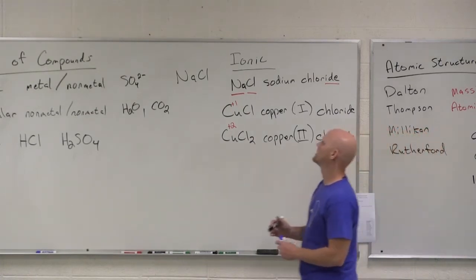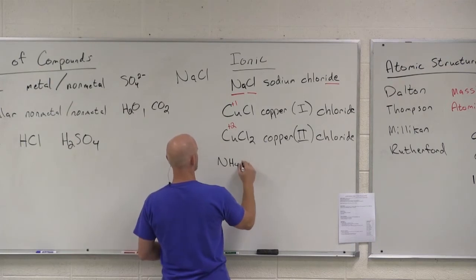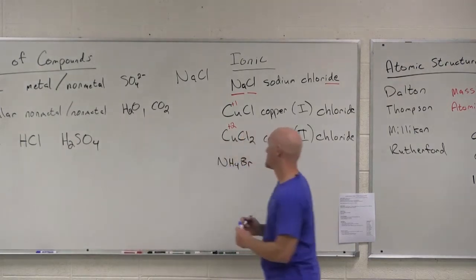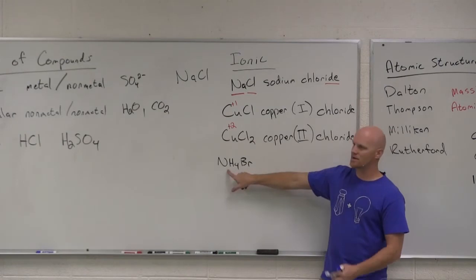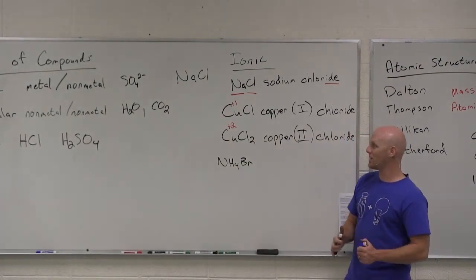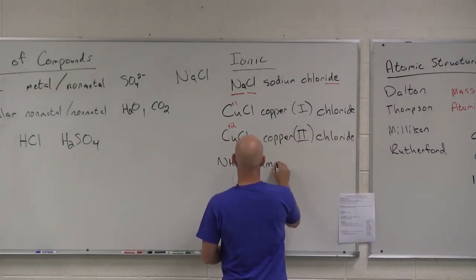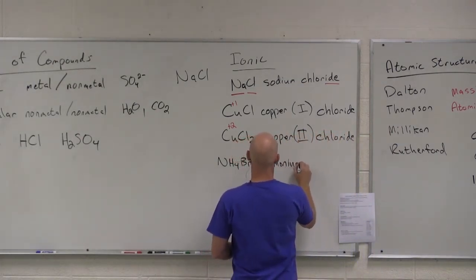We can also throw polyatomic ions into the mix here. So in this case, instead of naming the metal, you're just going to name the cation first. So in this case, what is NH4 as a cation? You've got to know your polyatomics. NH4 would be ammonium. Yeah, that's ammonium.